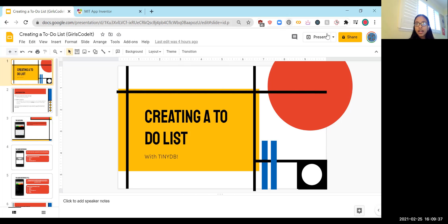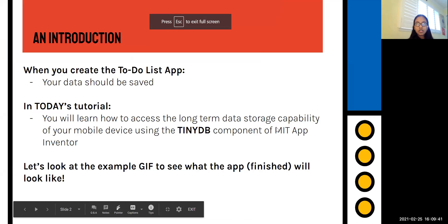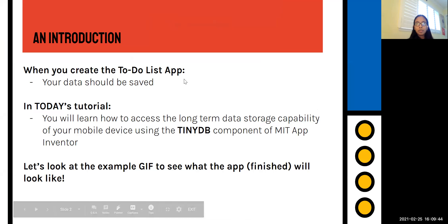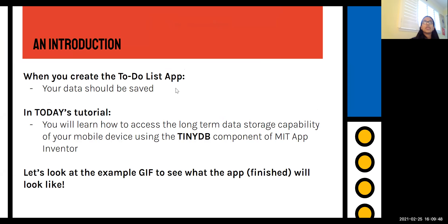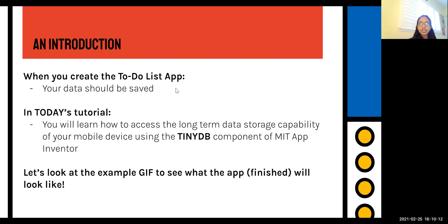Let's get started with the slides. When you create a To Do List app, we want our data to be saved. So basically, if I were to enter a task like 'clean the gutter' and then exit the app, when I opened it again I would want it to still say 'clean the gutter.' That's what we're going to be working on today. You will also learn how to access the long-term data storage capability of your mobile device using the TinyDB component in MIT App Inventor.